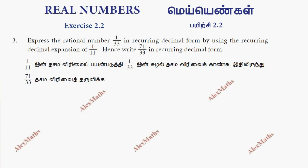Hi students, this is Alex here. Exercise 2.2, question number 3: express the rational number 1 by 33 in recurring decimal form by using the recurring decimal expansion of 1 by 11.